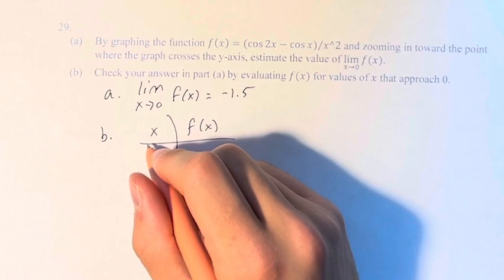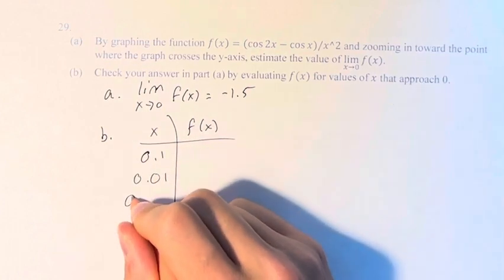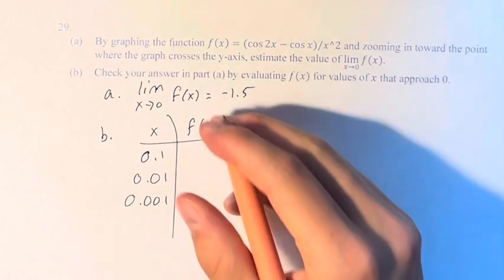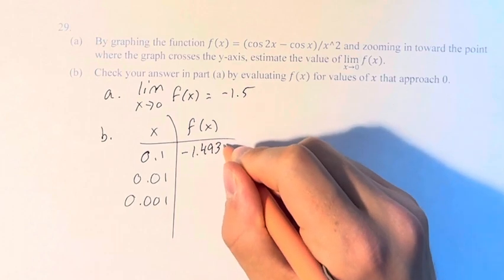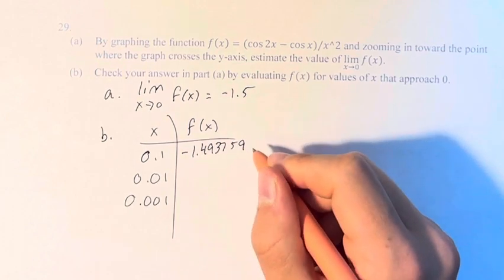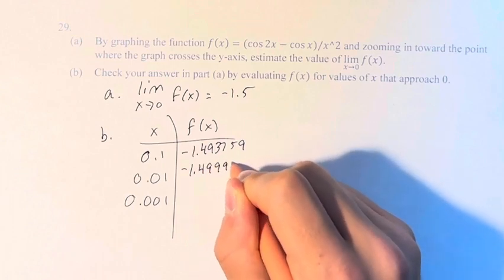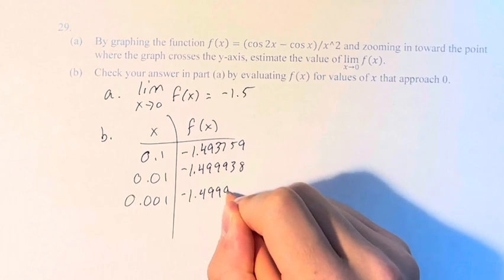So for values of x greater than zero: 0.1, 0.01, 0.001, plugging them into our function, we get negative 1.493759, negative 1.49938, and negative 1.499999. So these values are approaching negative 1.5.